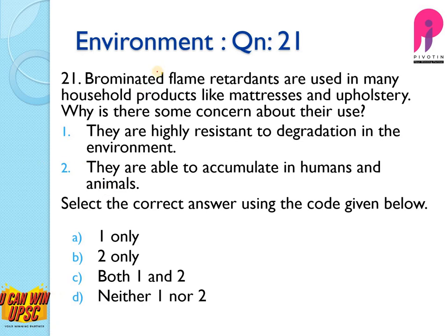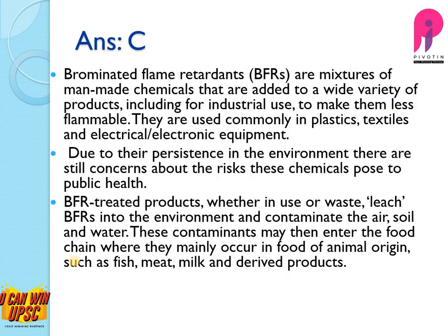Question 21: Brominated flame retardants are used in many household products like mattresses and upholstery — why is there concern about their use? They are highly resistant to degradation in the environment — yes, correct. They are able to accumulate in humans and animals — yes, also correct. The answer is both 1 and 2. Brominated flame retardants are a mixture of man-made chemicals used widely in industry and commonly found in plastics, textiles, and electrical and electronic equipment.